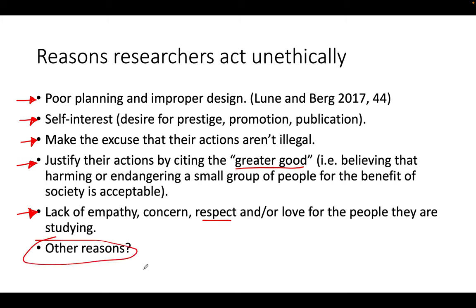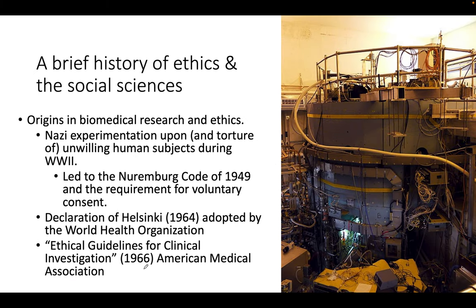A brief history of ethics in the social sciences: the origins are in biomedical research and ethics. During World War II there was Nazi experimentation and torture of unwilling human subjects — people were forced into it without their consent. This led, after the war, to the Nuremberg Code, which required voluntary consent, so if you didn't want to participate you didn't have to. Later there was the Declaration of Helsinki in 1964, adopted by the World Health Organization, and later ethical guidelines for clinical investigation in 1966, adopted by the American Medical Association.